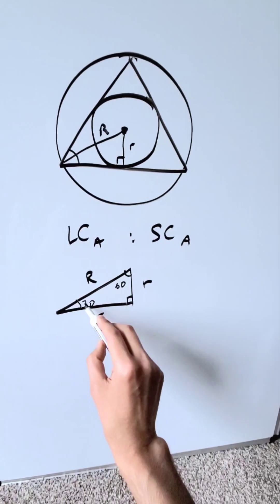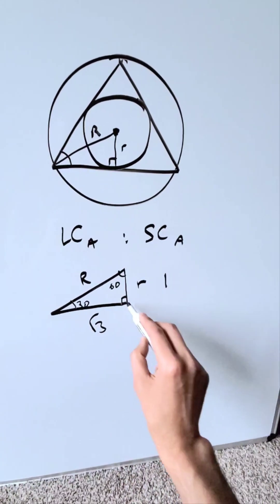The 60 opposes in terms of trigonometric ratio is a root 3. 30 opposes a 1. 90 opposes 2.